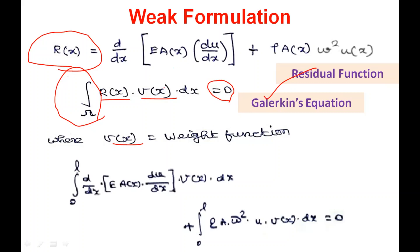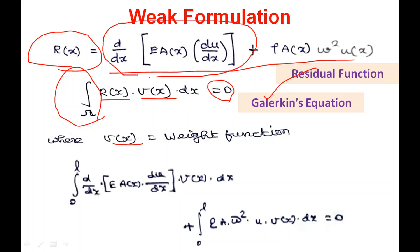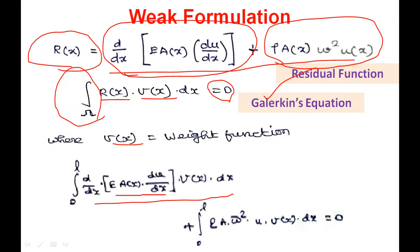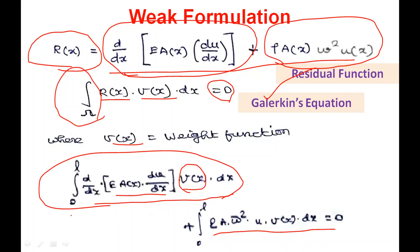That is why it is called the weak formulation. When we apply Galerkin's approach to this equation, the residual function has two parts: d/dx of (EA(x) du/dx), and ρA(x)ω²u(x). After multiplying by the weight function, we get two integral terms: integral from 0 to L of [d/dx(EA du/dx)]·v(x) dx, plus integral from 0 to L of ρAω²u·v(x) dx = 0. The first term contains a differential operator inside the integration, making it an integral differential equation.